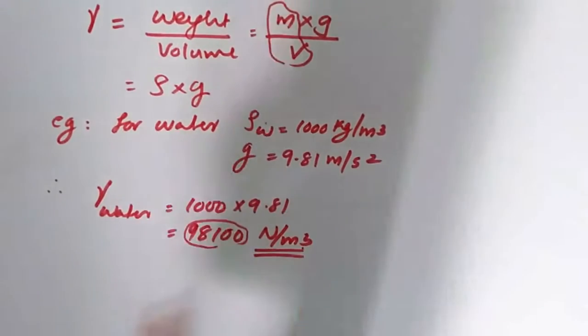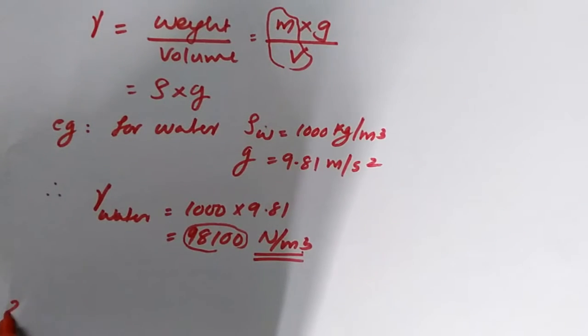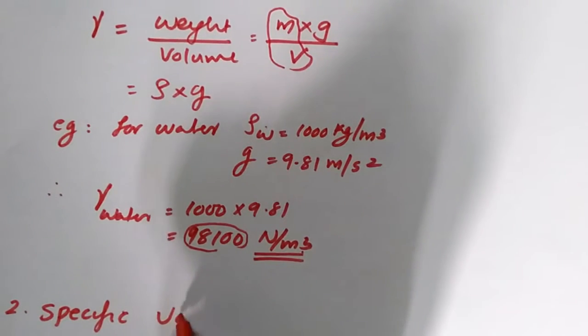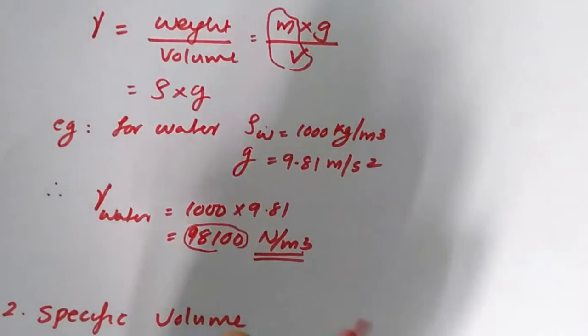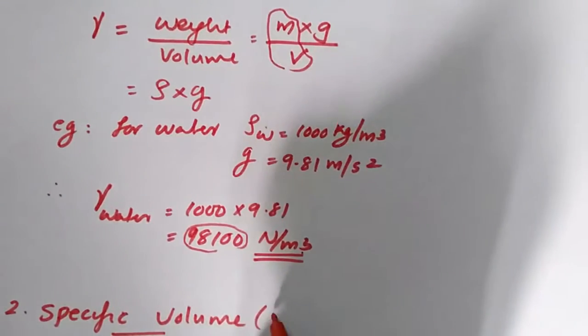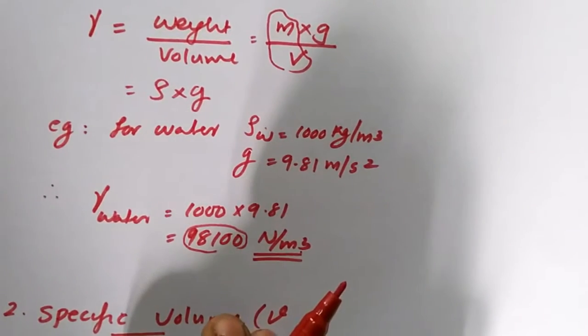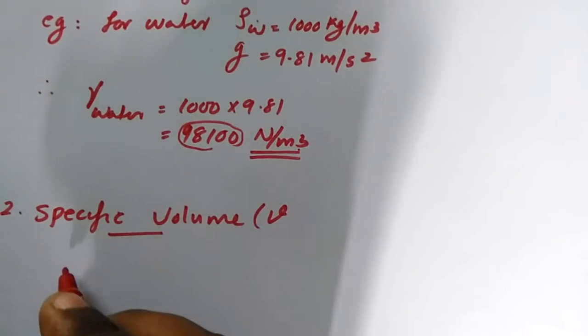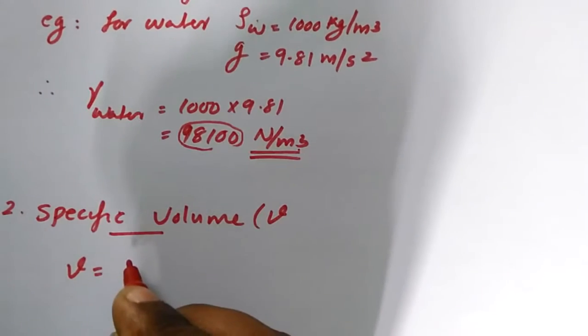So next property that we are going to discuss is specific volume. We will denote it by small v. Specific volume is one by density.